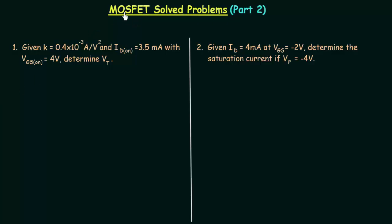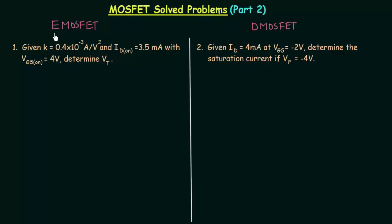We classified MOSFET into two types. The first one is enhancement type MOSFET and the second one is depletion type MOSFET. In this lecture we will solve two problems: the first problem is based on enhancement type MOSFET and the second problem is based on depletion type MOSFET.